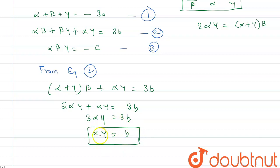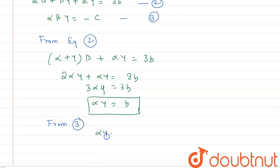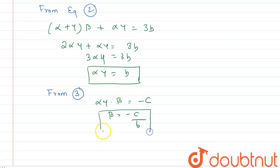Now from equation 3, αβγ = −c, so we can write αγ · β = −c. Since αγ = b, we get β = −c/b.